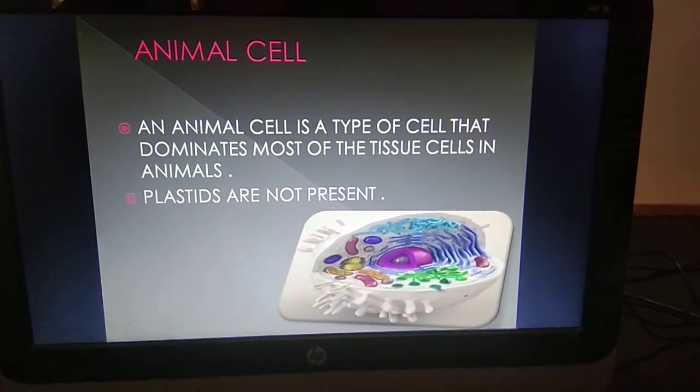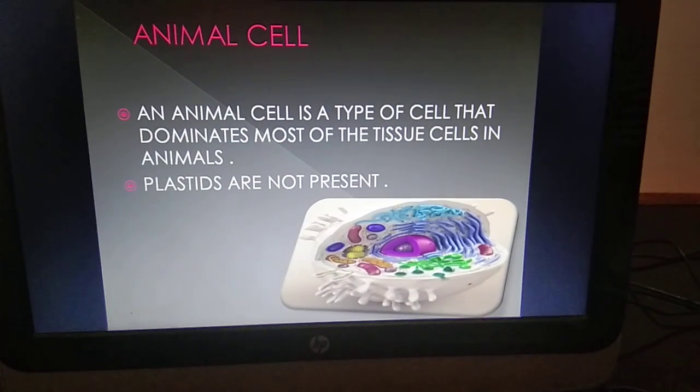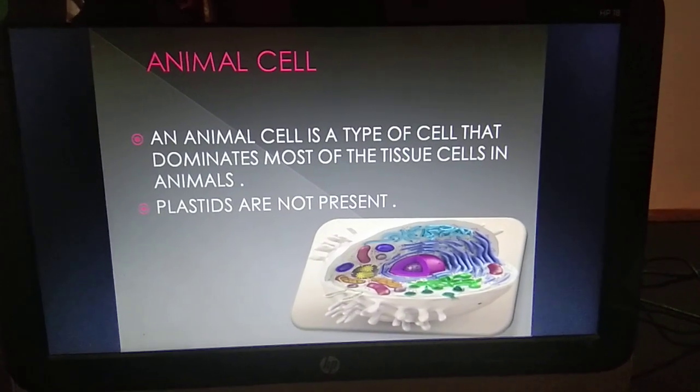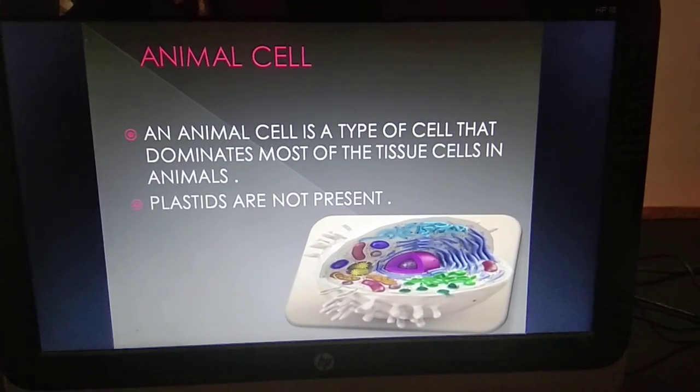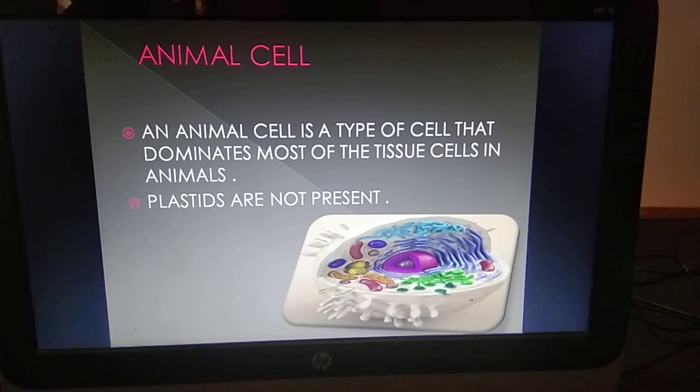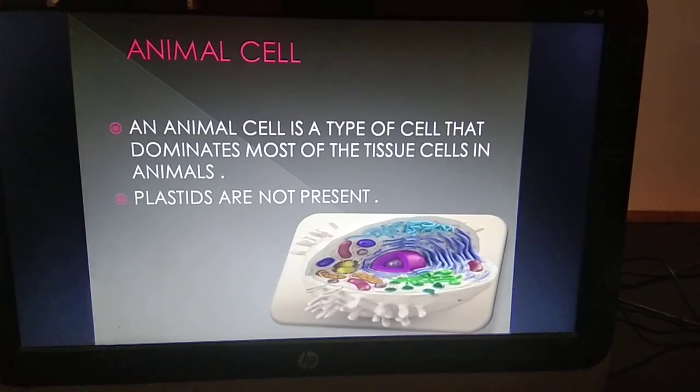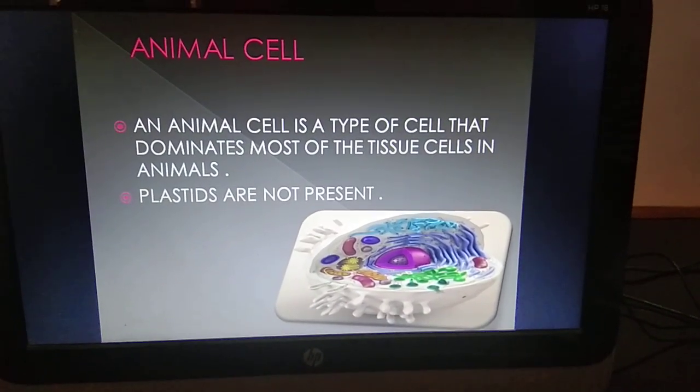Our next topic is animal cell. A simple definition of animal cell is a type of cell that dominates most of the tissue cells in animals, and plastids are not present in it.